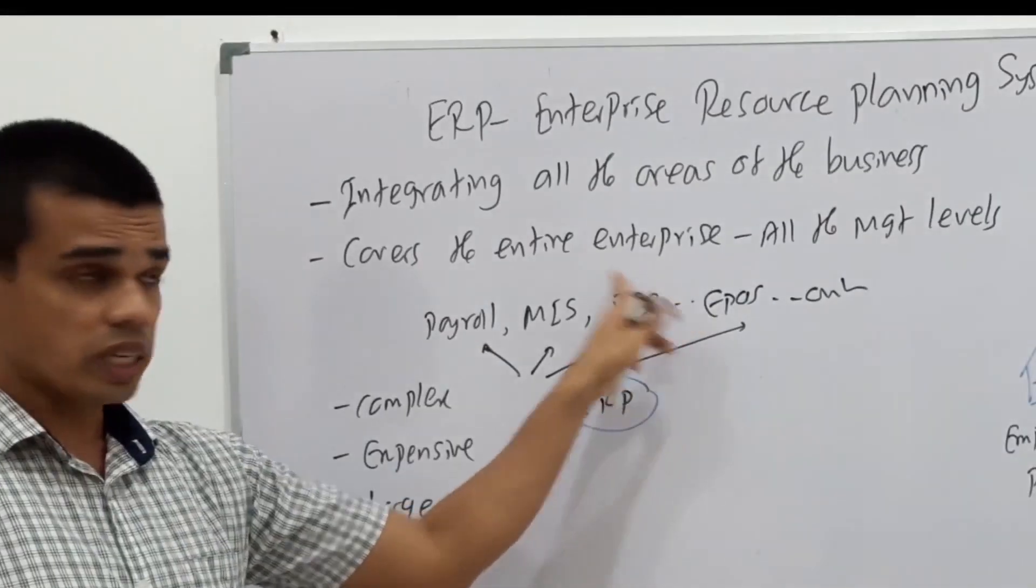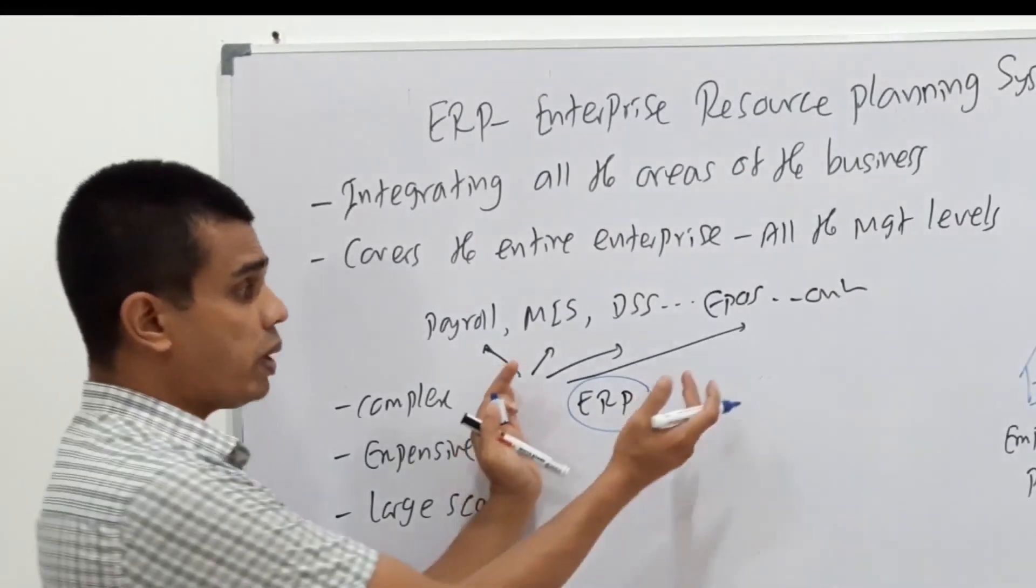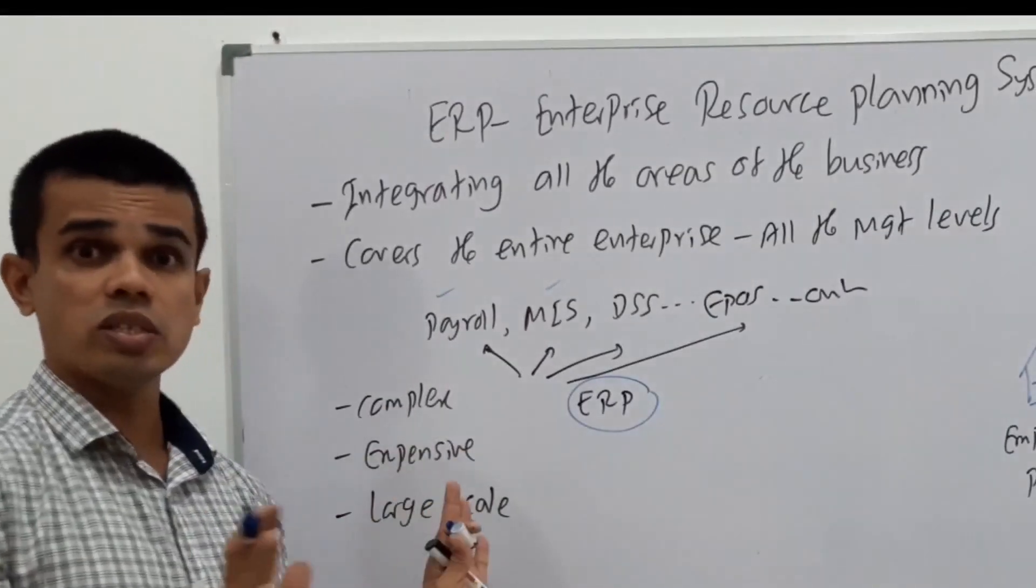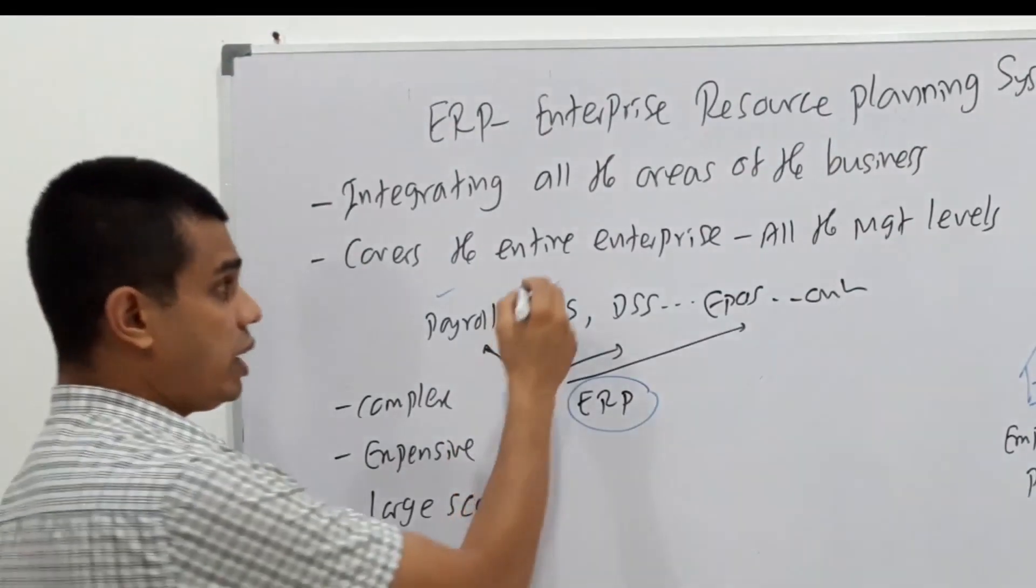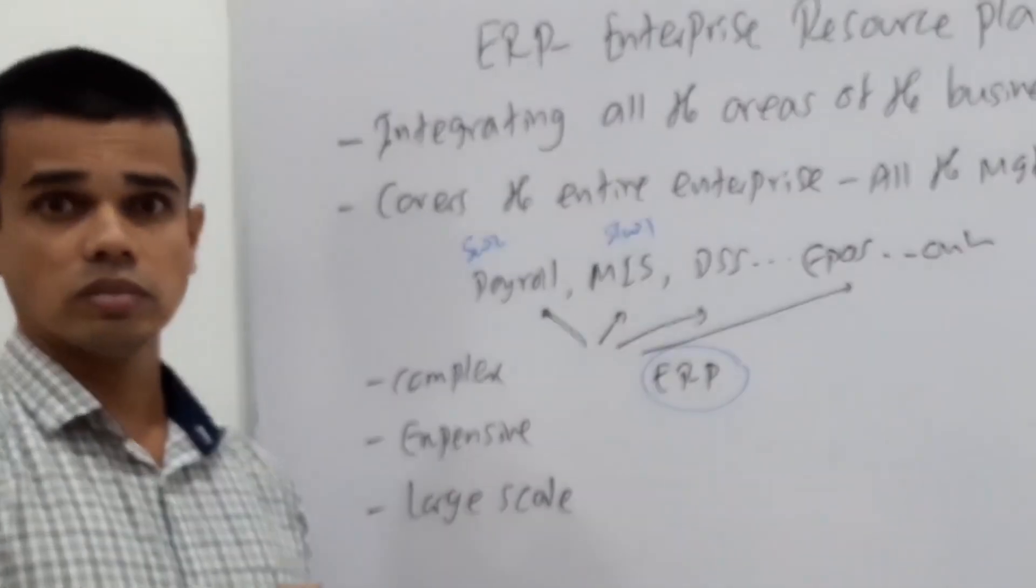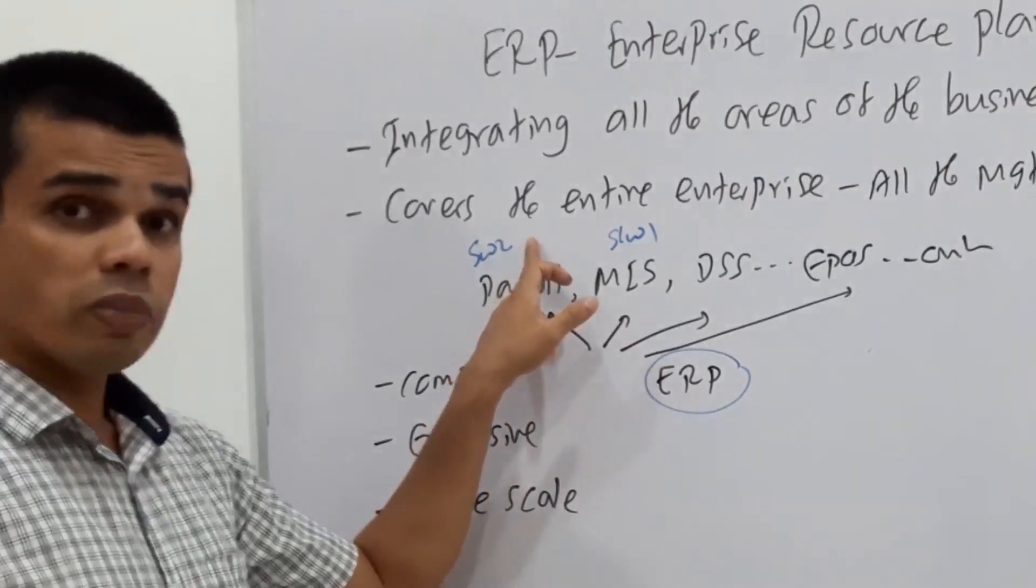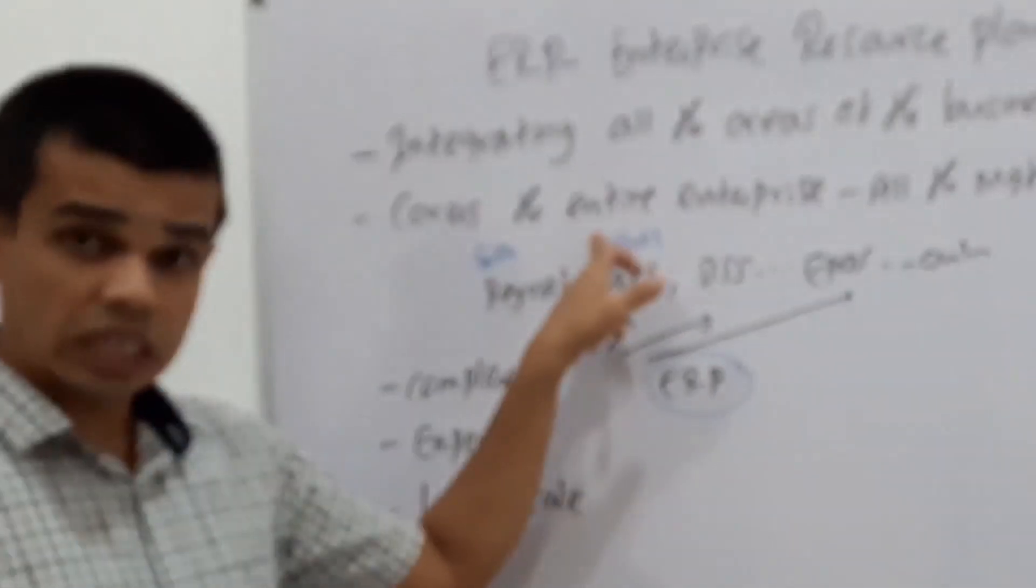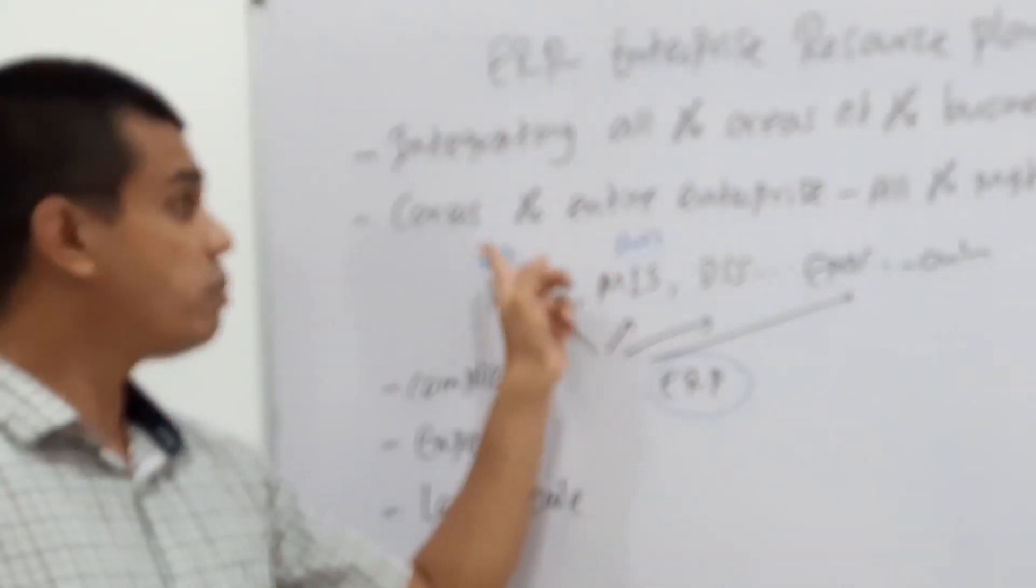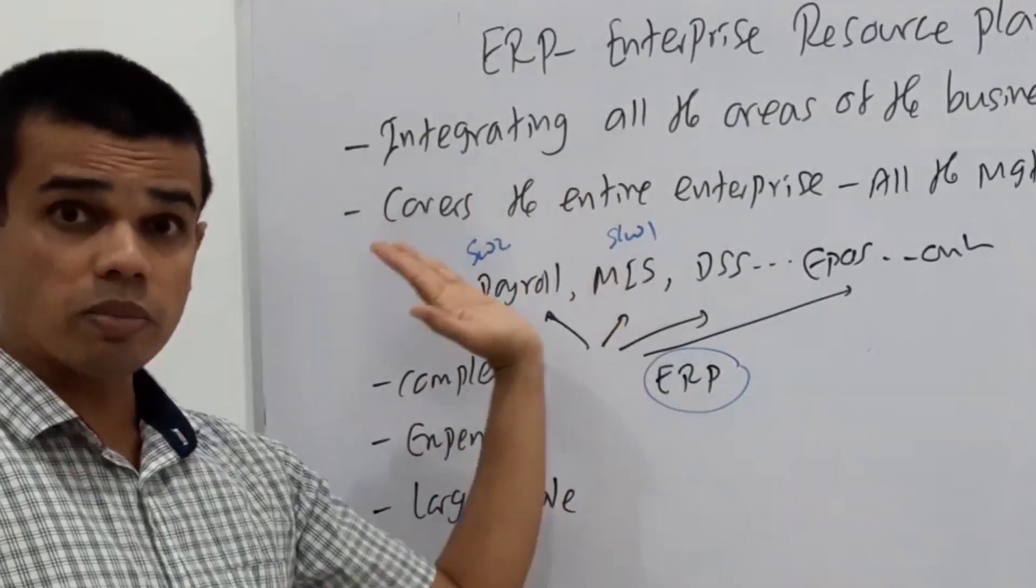The other situation is, some organizations, they don't use ERP. They don't buy this big software. Instead, what they do is, they have a MIS product, they have the payroll product. That's all. But even MIS is made by one software company, payroll is made by another software company. When we don't have ERP. But if this is made by one software company and this is constructed by some other company, what about the compatibility between the systems? Highly compatible or not? No. Why? They are using two different technologies.